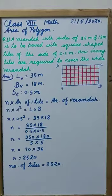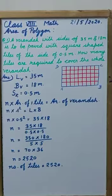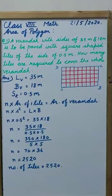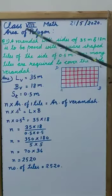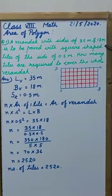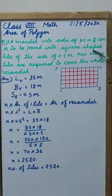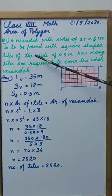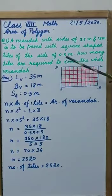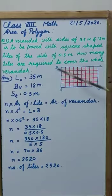Good morning my dear students. Today in this video we will take a problem sum from our daily life related to area of polygon. A veranda with sides of 35 meter and 18 meter is to be paved with square shaped tiles of the side of 0.5 meter.